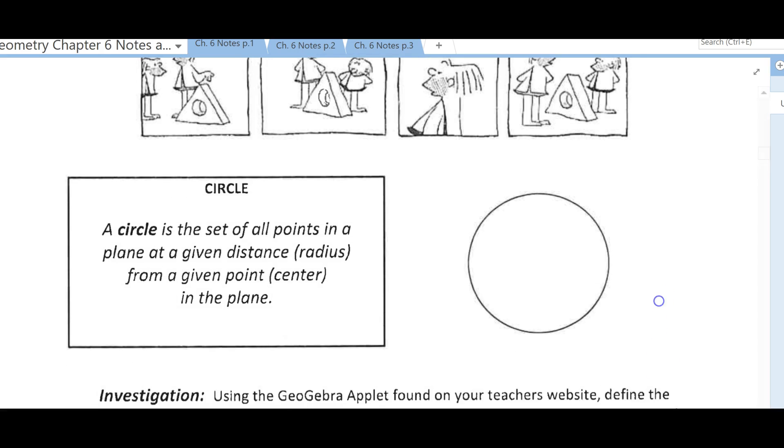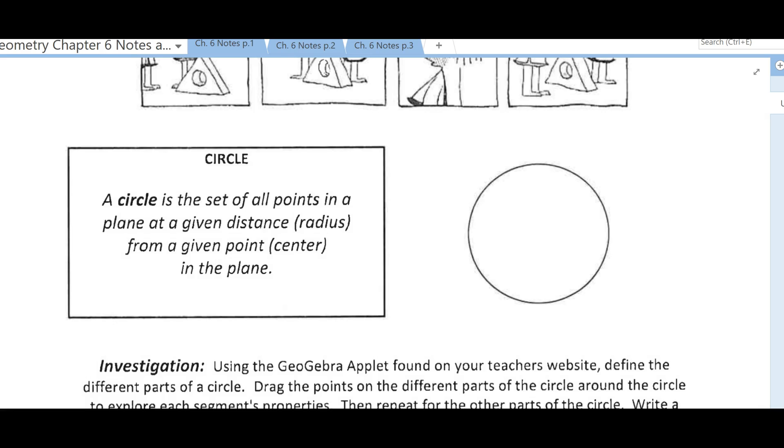So for a circle, the formal definition is the set of all points in a plane. Remember, a plane is just a flat surface like your desk, at a given distance called the radius from a given point. And this is all in a flat surface.